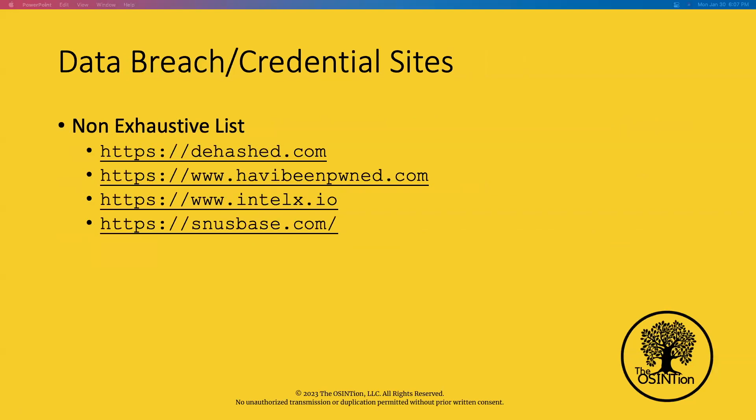When we talk about data breach sites, this is a non-exhaustive list. We're going to look at three of them and then talk about a fourth. Dehashed is my personal favorite — it does charge, I'll show you the pricing. Have I Been Pwned — you can pay for an API key but you will never see anything that doesn't belong to your authenticated email address; Troy Hunt will not grant domain-level access. Intel X is good but expensive. And Snoo Space — I haven't really gotten a lot out of that.